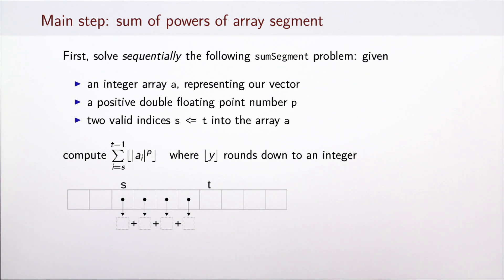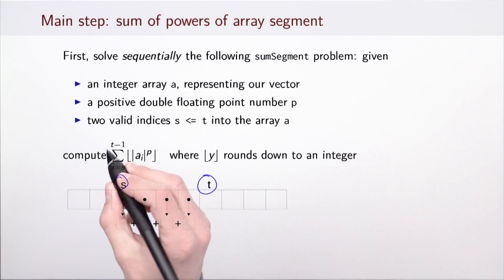Let's look at a sub-problem that computes the sum of p-powers of a segment of an array. This array represents our vector. Suppose that p is given as a double floating point number, and the segment is given using two indices: s, which indicates the first index where we should start the sum, and t, which indicates the index where we should stop. So t-1 indicates the last element of the array that we should consider.